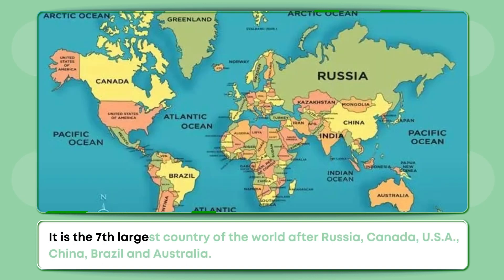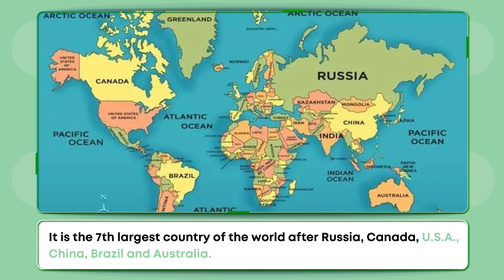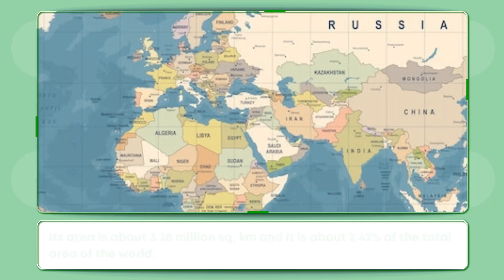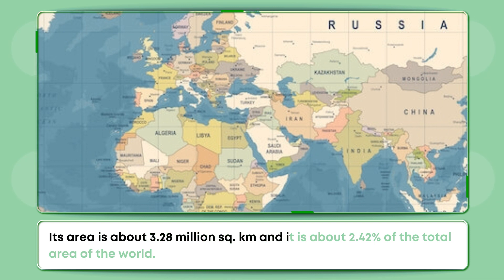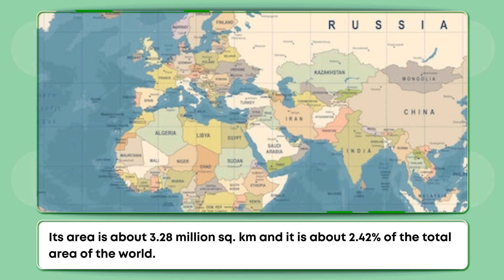It is the seventh largest country of the world after Russia, Canada, USA, China, Brazil and Australia. Its area is about 3.28 million square kilometers, and it is about 2.42 percent of the total area of the world.